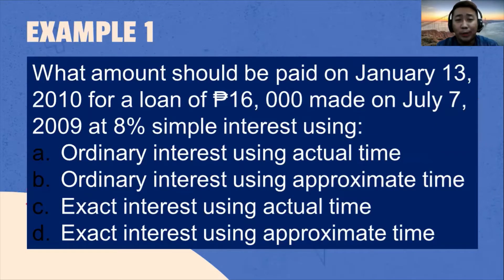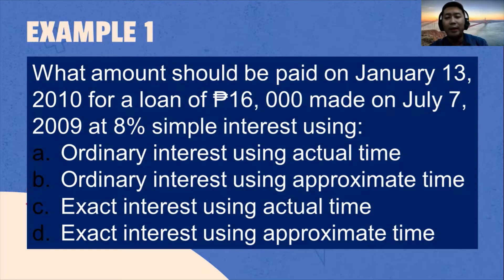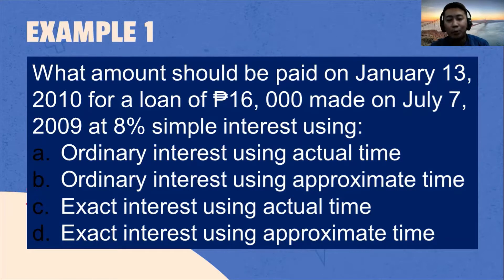Let's now try to solve this given problem. What amount should be paid on January 13, 2010 for a loan of P16,000 made on July 7, 2009 at 8% simple interest using: A, ordinary interest using actual time; B, ordinary interest using approximate time; C, exact interest using actual time; and D, exact interest using approximate time.